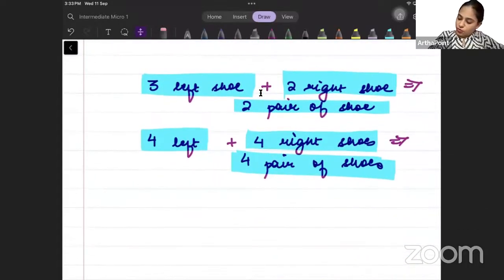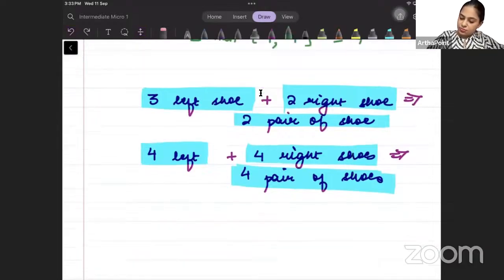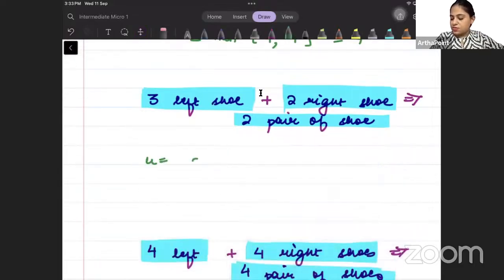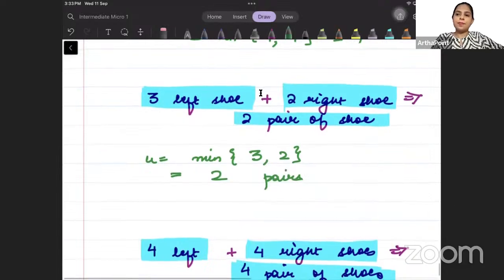Similarly, if I go ahead and find it here, u is min of, how many left you have? 3. How many right you have? 2. So, min of 3 and 2 will be 2. So, how many pair of shoes you have? 2 pairs.